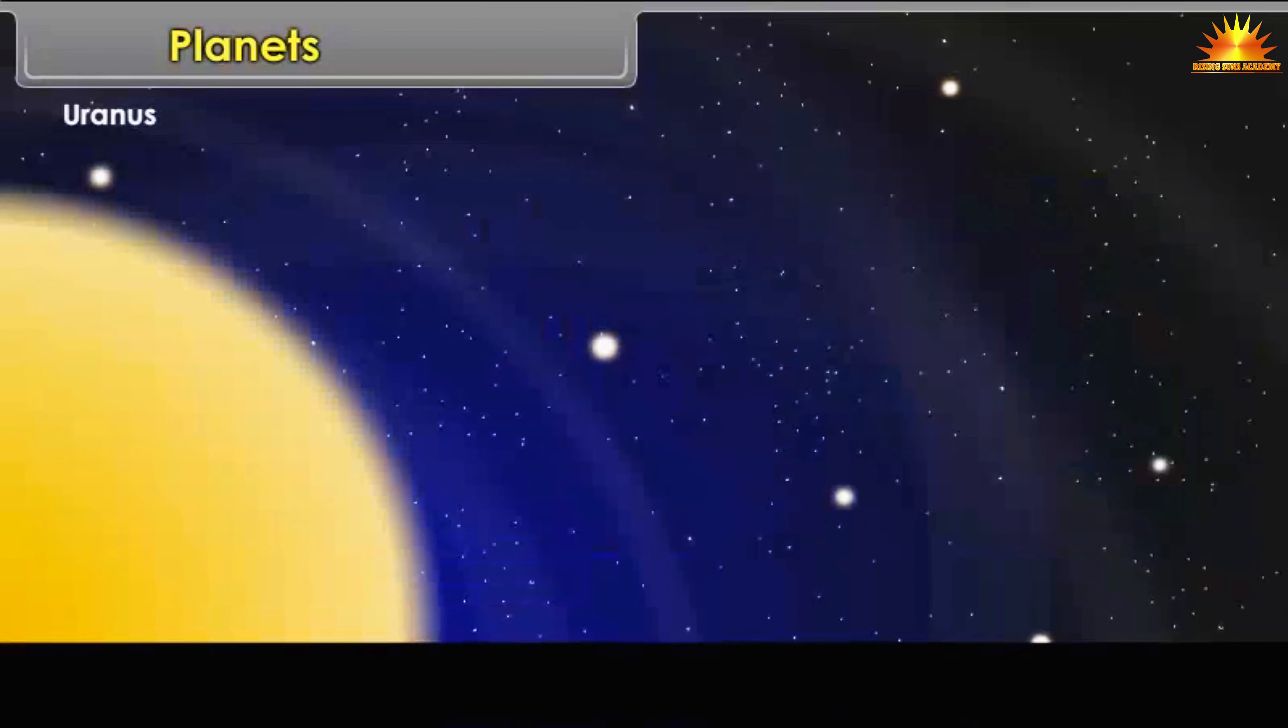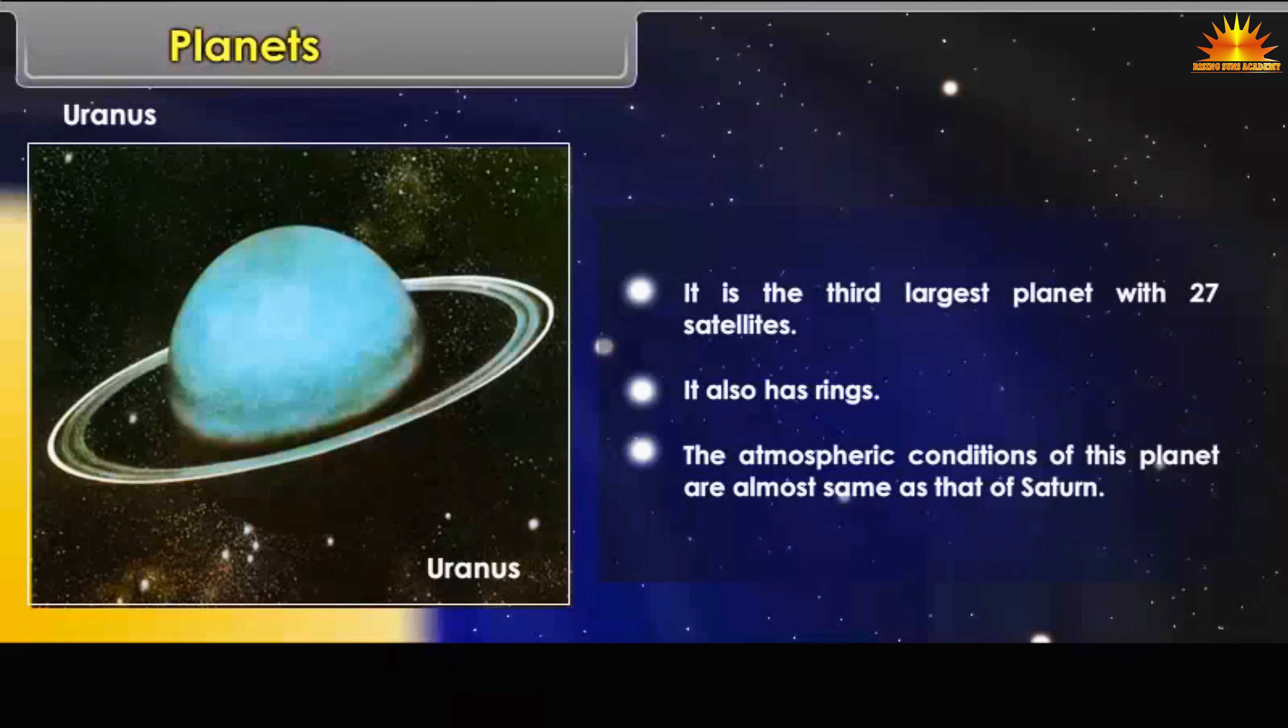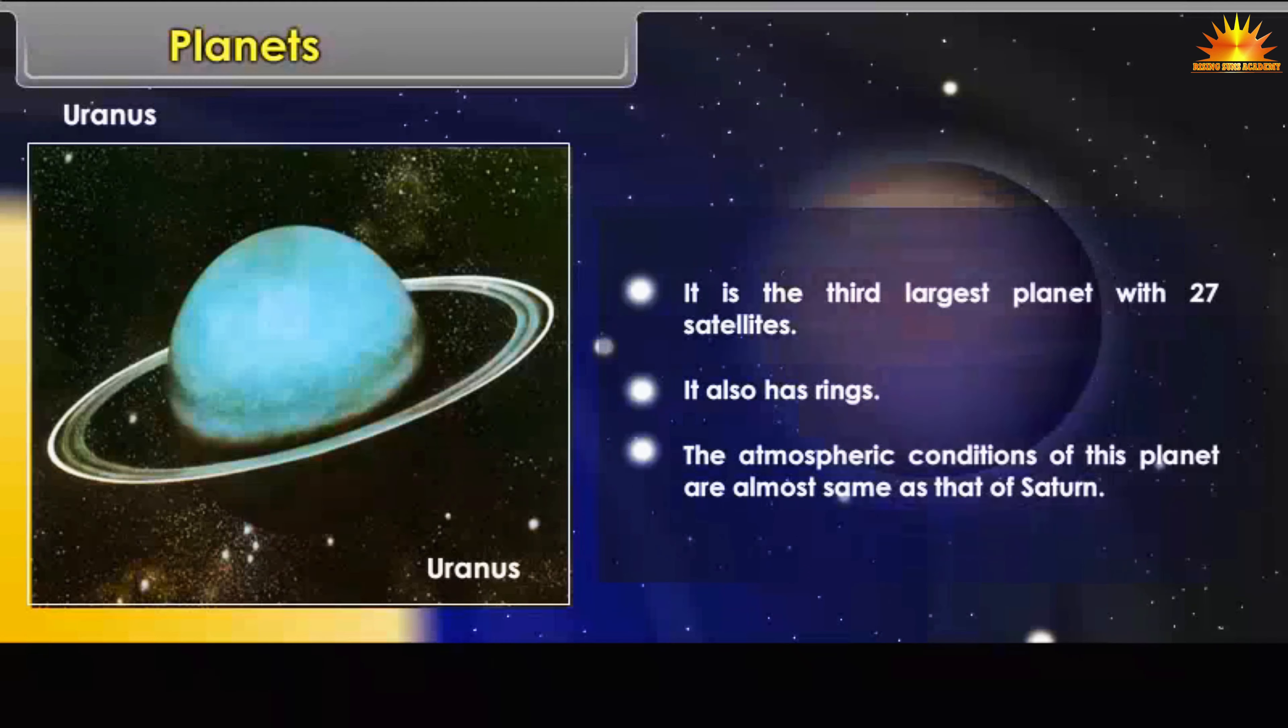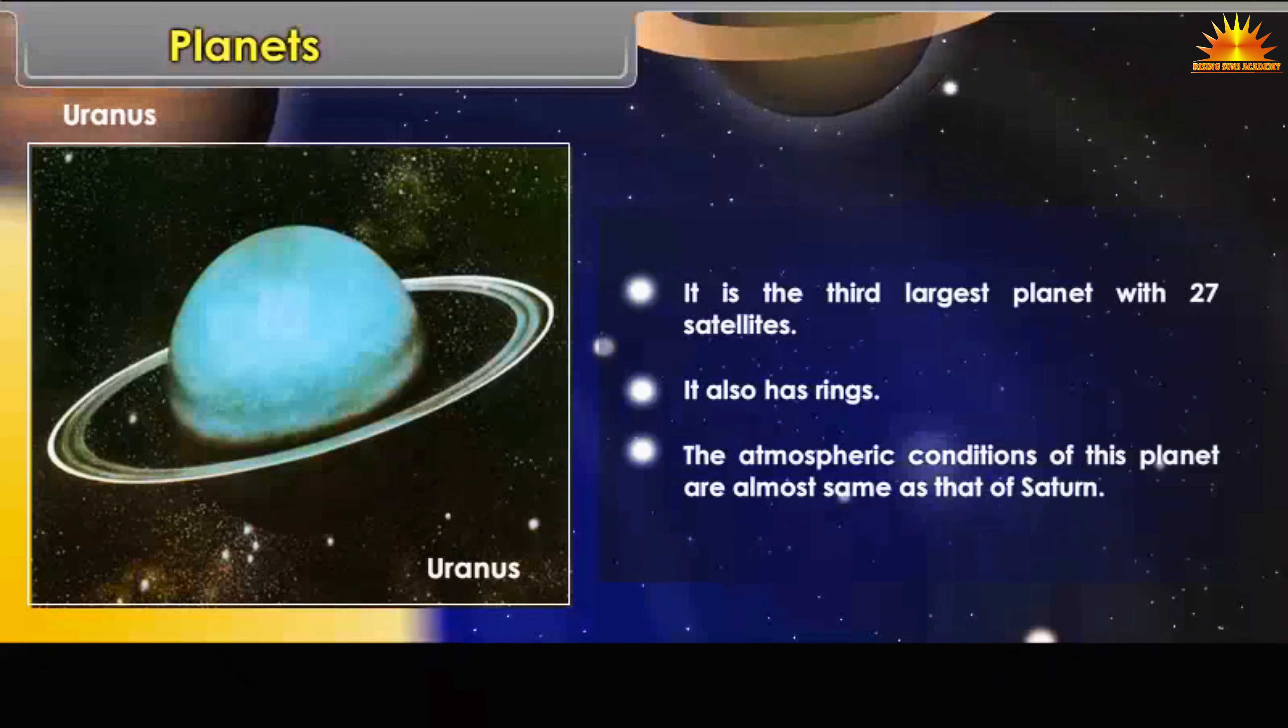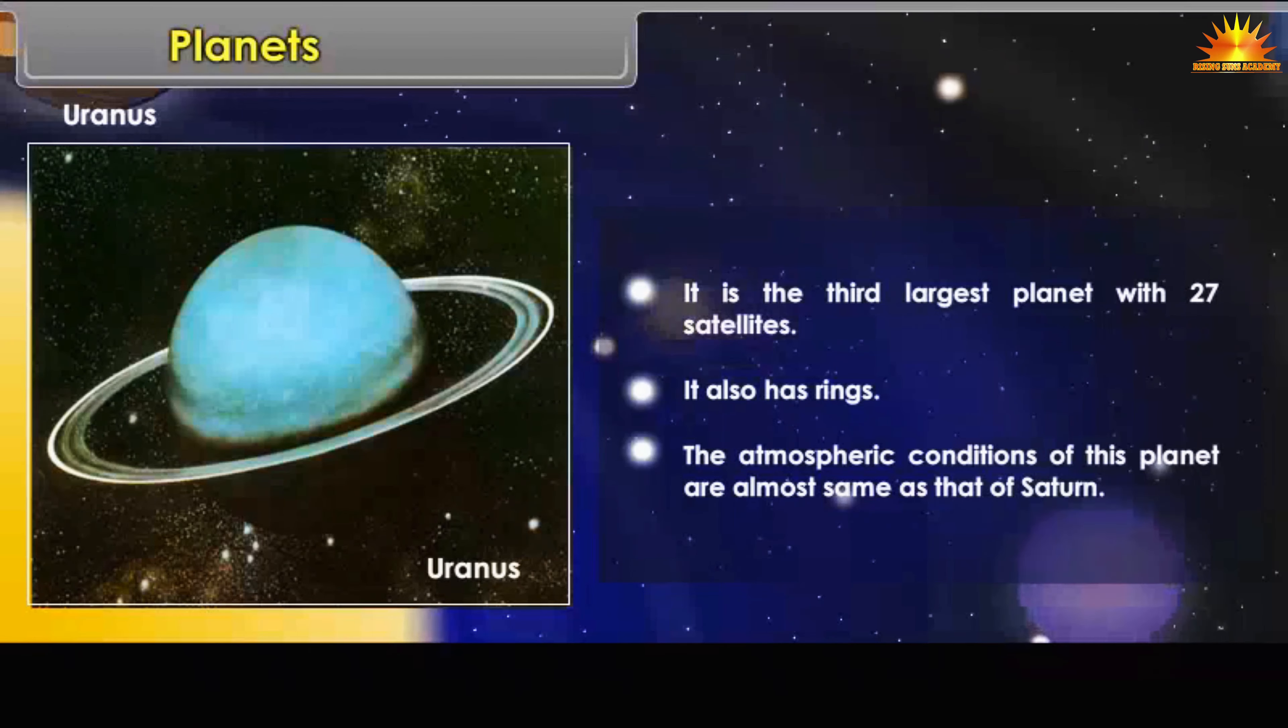Uranus: It also has rings. The atmospheric conditions of this planet are almost same as that of Saturn.